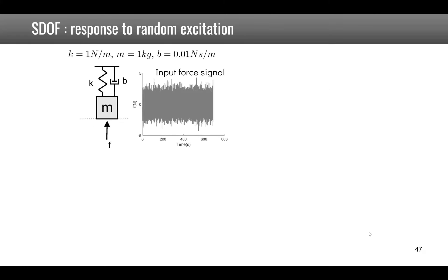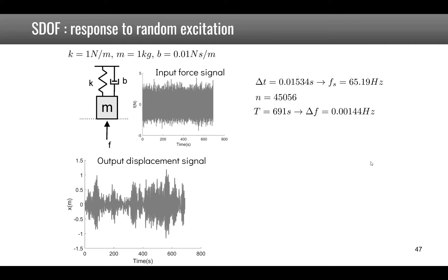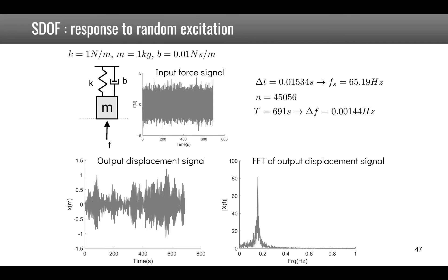With a random input force on the same system, sampled at fₛ = 65 Hz with N points giving total time 691 s (frequency resolution ~1.4 mHz), the Fourier transform of the output displacement clearly shows an amplification around the resonance at 0.159 Hz.